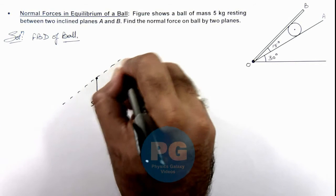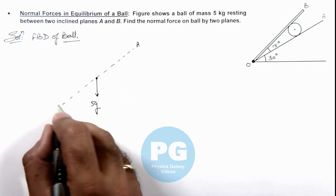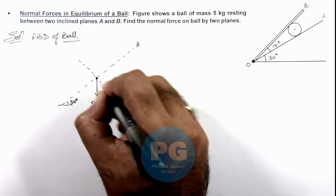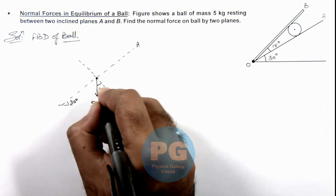Say this is the reference line for incline A, which is at an angle 30 degrees, and this is the direction normal to the incline on which the ball is resting, so this angle will also be 30 degrees.